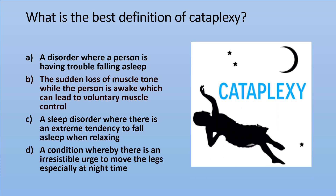The answer is B. During cataplexy, there is a sudden loss of voluntary muscle control brought on by a strong emotional trigger such as excitement or laughing. Signs might be a droop in the eyebrows or slurred speech. It can be a loss of ability to talk, move, or keep the eyes open, but the person remains conscious while this is happening.